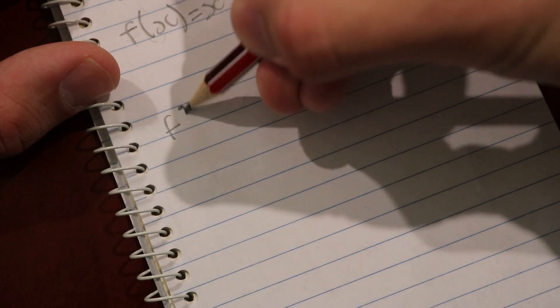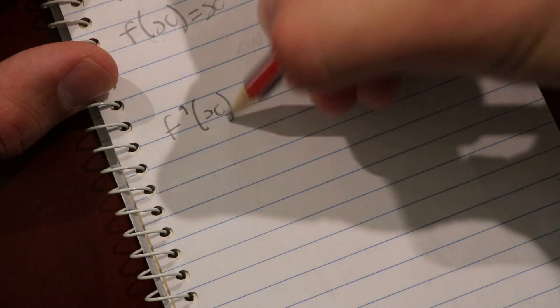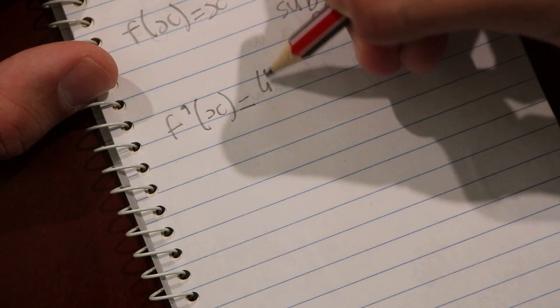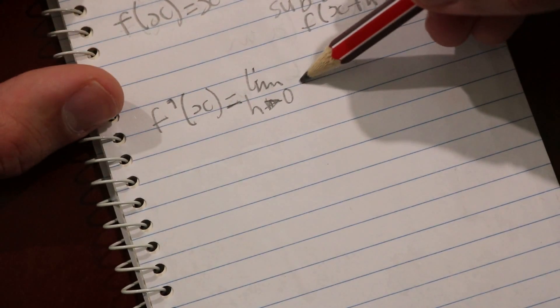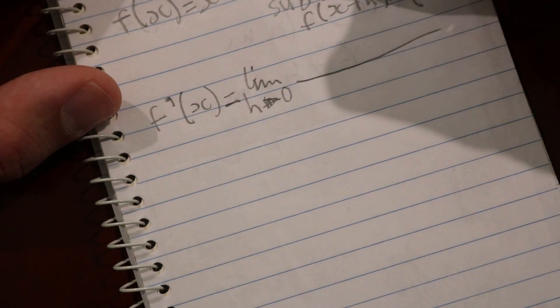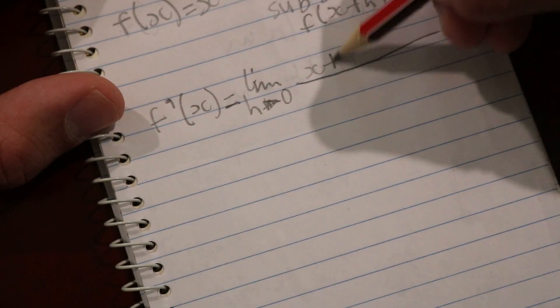Start off by writing f'(x) equals the limit as h approaches 0, and substitute the values in like so.